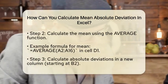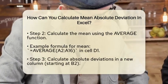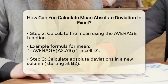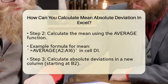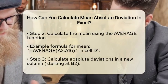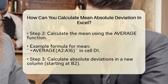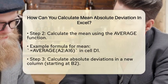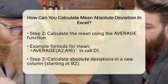Next, you will want to find the mean of your data set using the AVERAGE function. In a new cell, let's say D1, type the formula =AVERAGE(A2:A16). Press enter, and you will have the mean of your data.